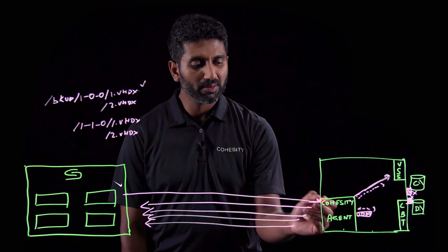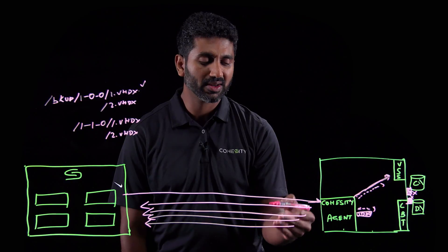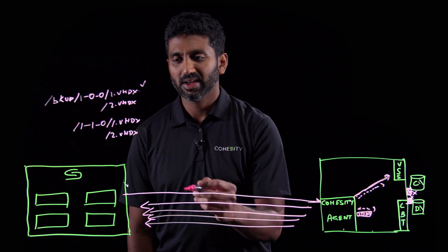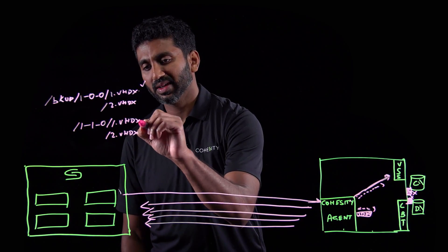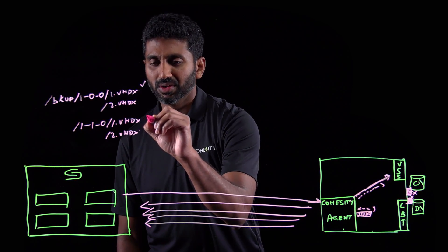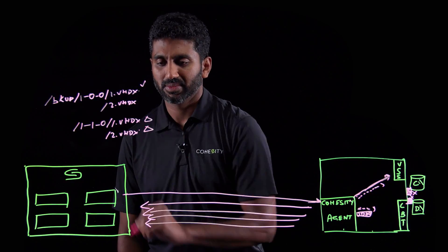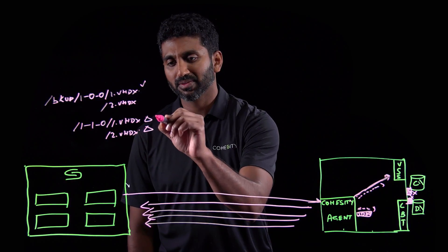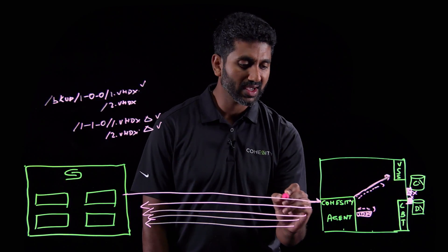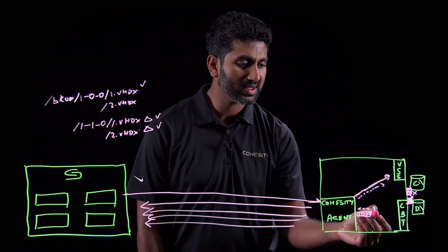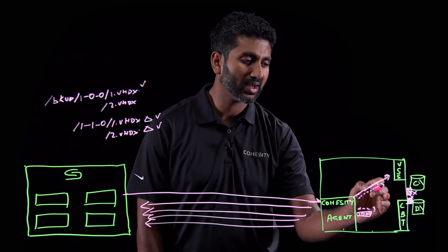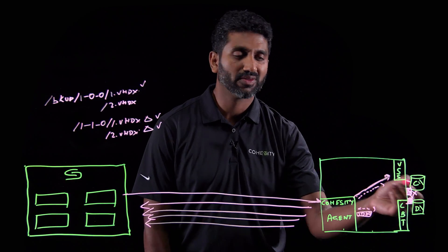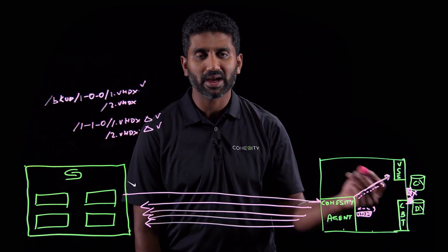The Cohesity cluster will again pull data across parallel streams from the Cohesity agent and will modify these two files to only write the delta. Once all the delta blocks are written to the files, the backup will be marked as successful. It will then instruct the Cohesity agent to do the same with the VSS — the agent will let the VSS know to release the snapshot, and notify all writers indicating that the backup is successful.